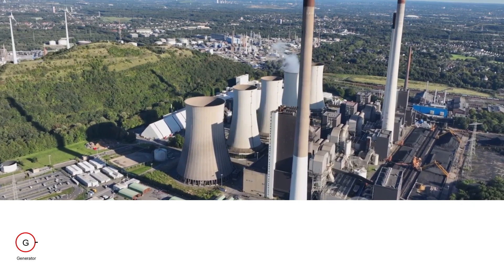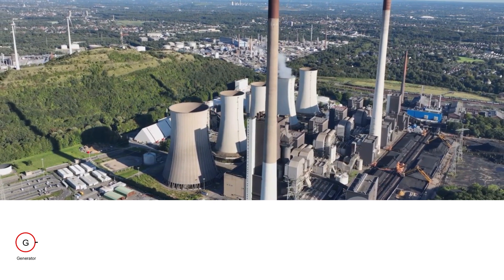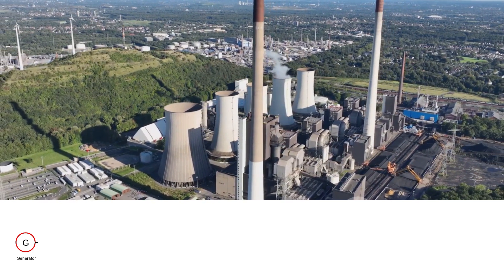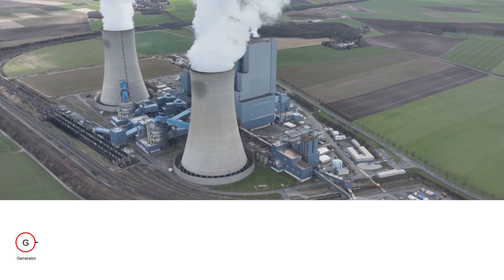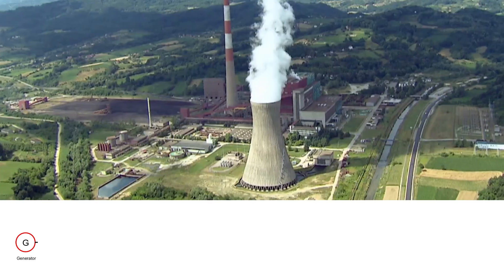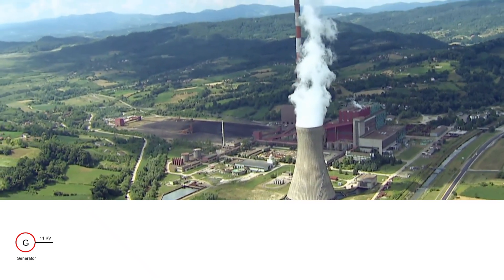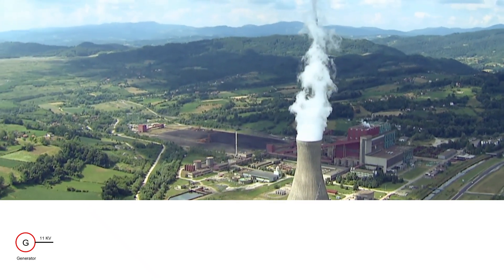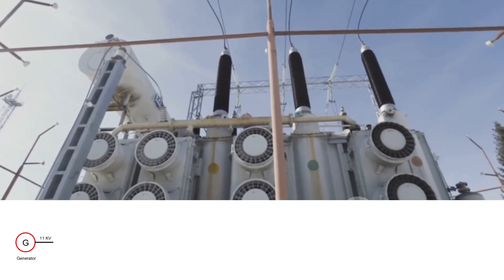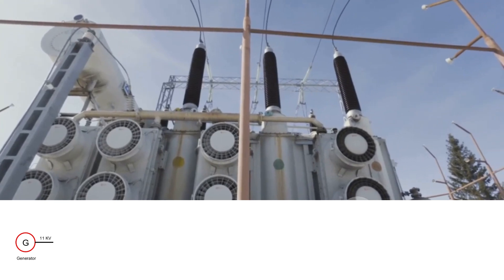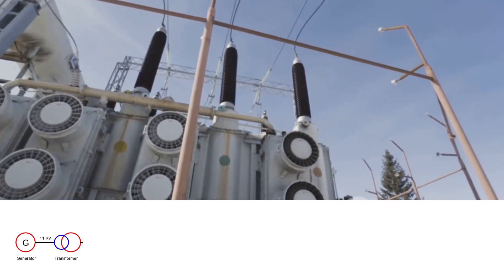At the start of the system is the power generation station — this could be a coal, hydro, nuclear, or renewable power plant. In the single line diagram, the generator is shown as a circle marked with a G. The generated voltage is typically in the range of 11 kV to 30 kV depending on the generator size and design. This is a medium voltage, sufficient for generation but not suitable for long-distance transmission, so this voltage is stepped up using a step-up transformer.